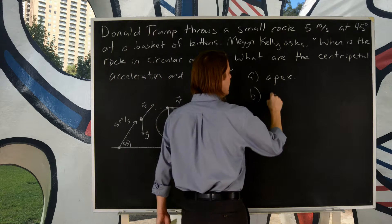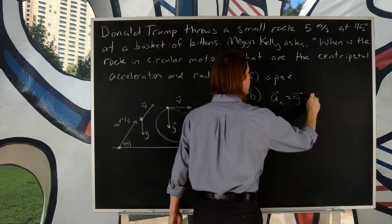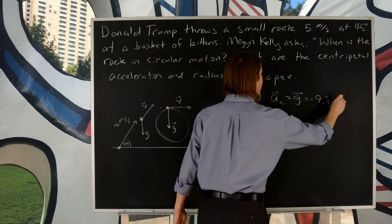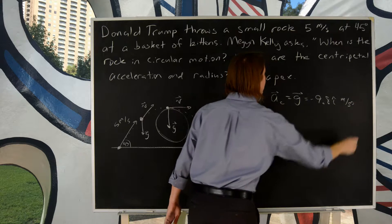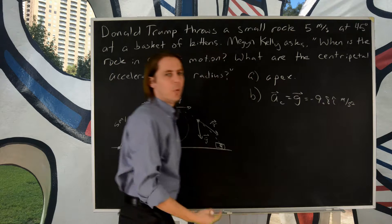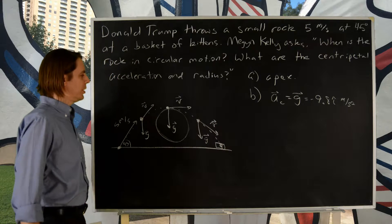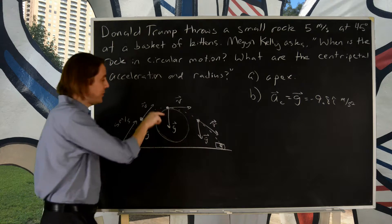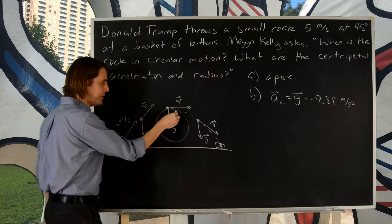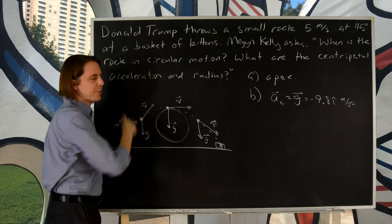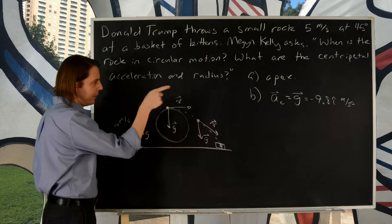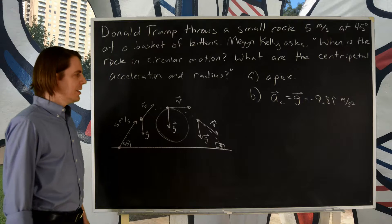So B, a_c is equal to g. It's equal to negative 9.8 i-hat meters per second squared, if we define the y-axis as positive pointing up. And you may say, that's not centripetal, it won't stay with a circle. The reason it makes a parabola and not a circle is that acceleration doesn't continue. But we're just talking about one point in time. So at one point in time, if you imagine this is circular motion, then g would be the acceleration.